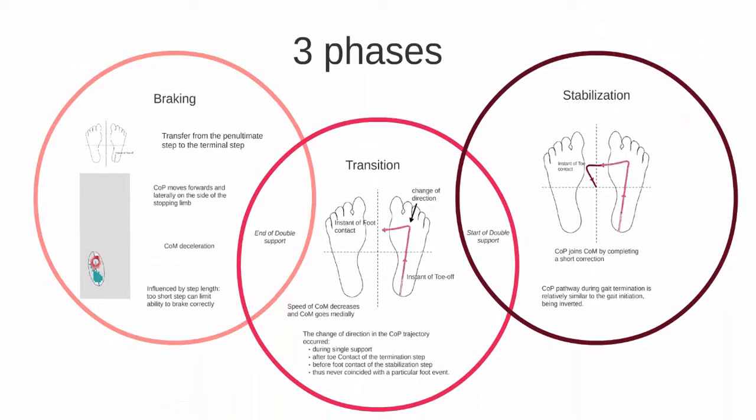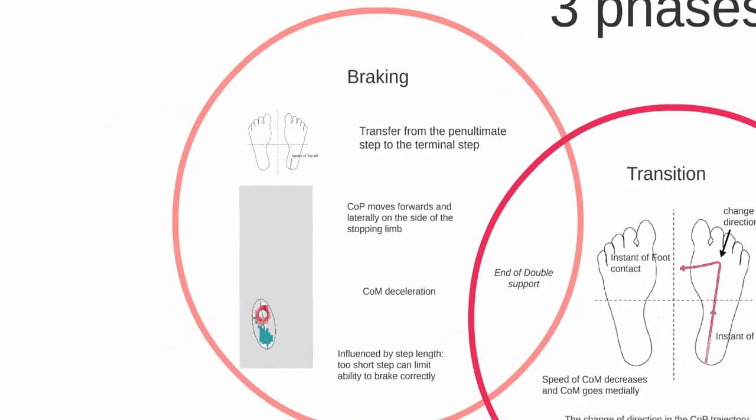Gait termination is commonly described and analyzed in three phases: braking, transition, and stabilization. The braking phase corresponds to the movement of the center of pressure from the penultimate support to the last support until the penultimate support leaves the ground.